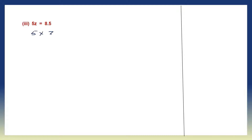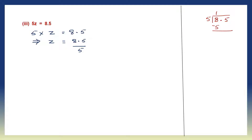Question 3: 5z means 5 into z equals 8.5. To solve for z, we leave z on the left hand side, 8.5 on the right hand side. Transpose 5 to the right — it becomes division. So 8.5 divided by 5. 5 ones are 5; 8 minus 5 is 3. There is a point after 8, so I carry that point up and bring down the 5. Now my number is 35. 5 sevens are 35. So the value of z is 1.7.